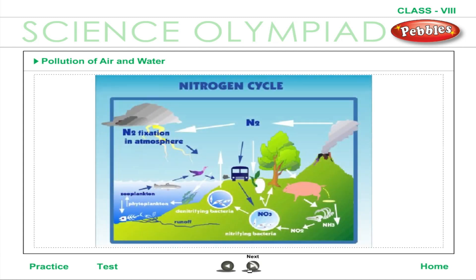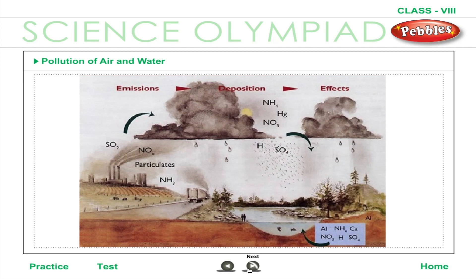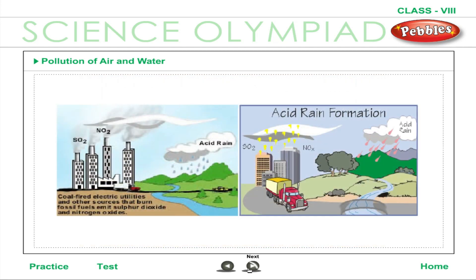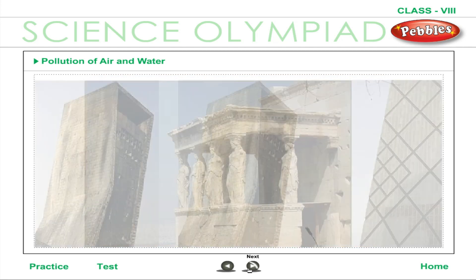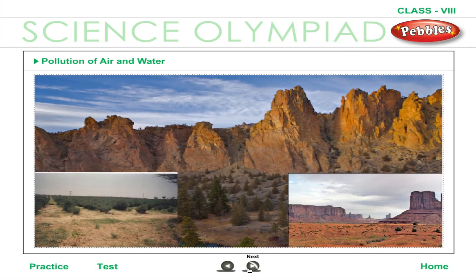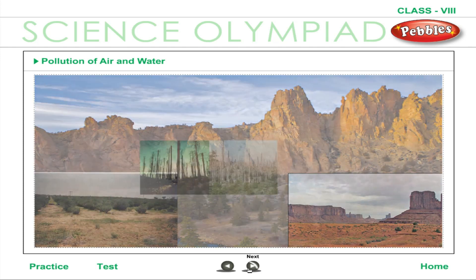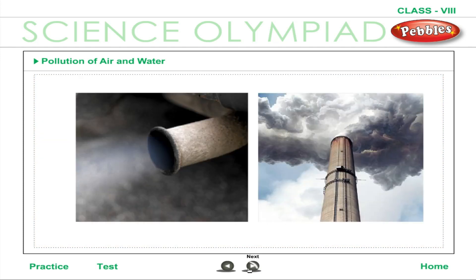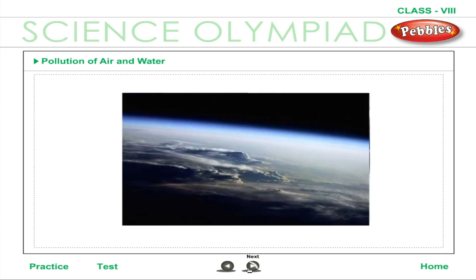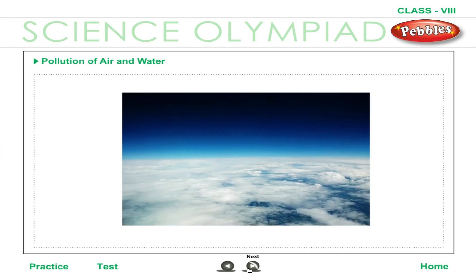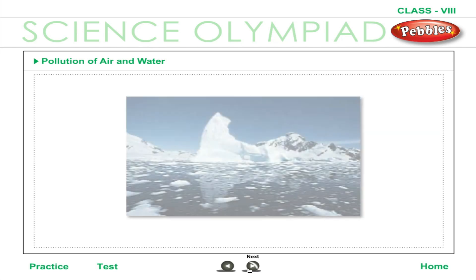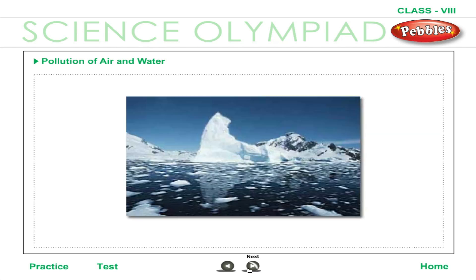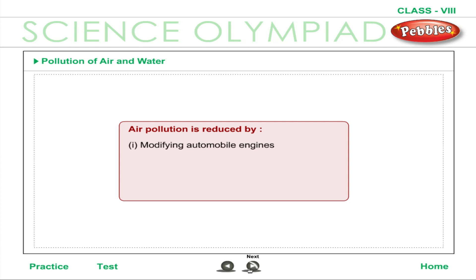Oxides of nitrogen and sulphur combine with rainwater to form acid rain, which affects soil fertility, vegetation, buildings and monuments. Carbon dioxide and some other gases like methane are called greenhouse gases. They trap radiation from the earth and are considered to be the cause of global warming.